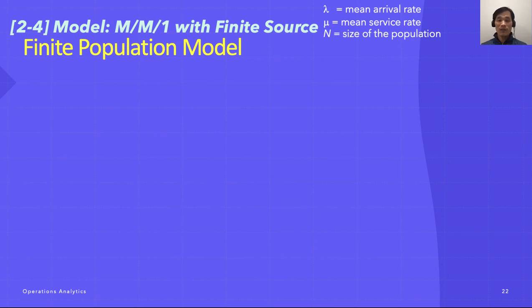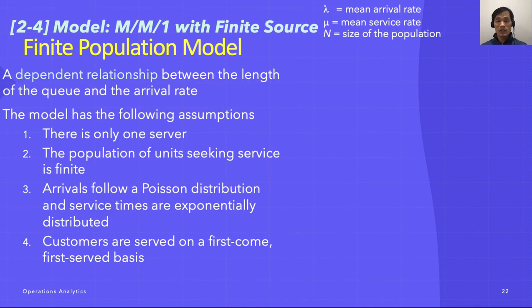With a finite population, the nature of distribution changes from independent to dependent relationship between the length of the queue and the arrival rate. Here are the formulas that reflect such changes.